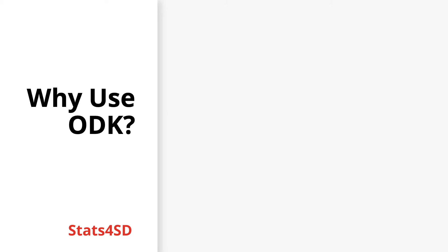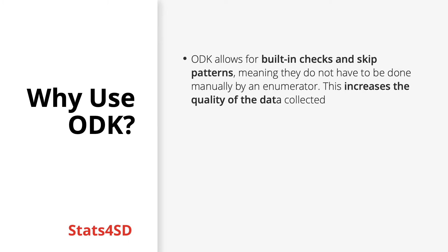Why should we choose to use ODK? There are numerous reasons, here are a few of the most important. Firstly, ODK allows for greater control over data quality. This is achieved by using built-in checks and skip patterns, meaning they do not have to be done manually by an enumerator, therefore minimizing the potential for human error.